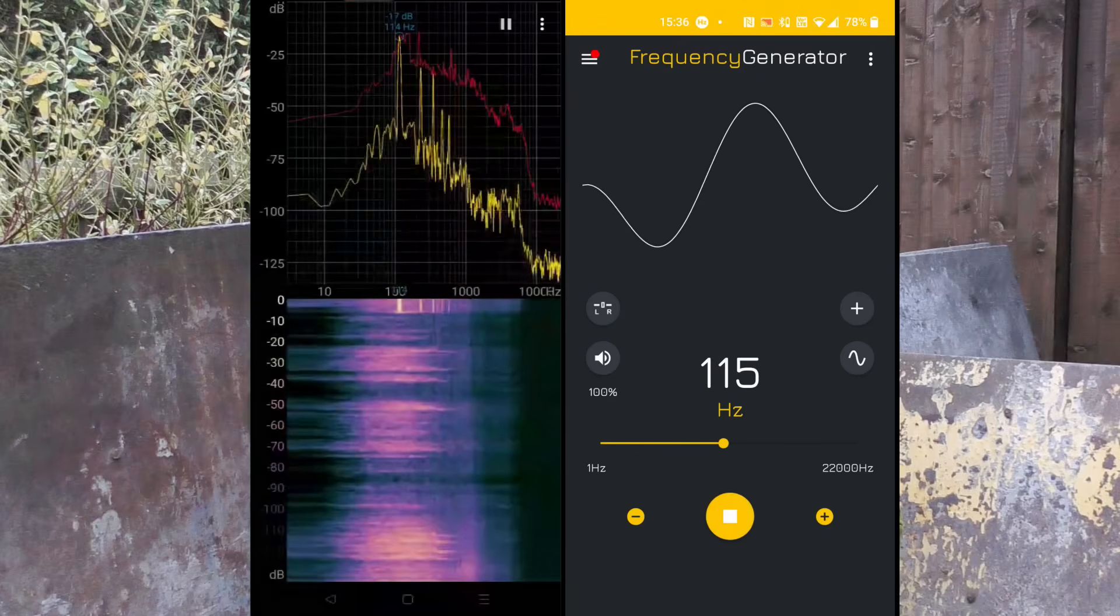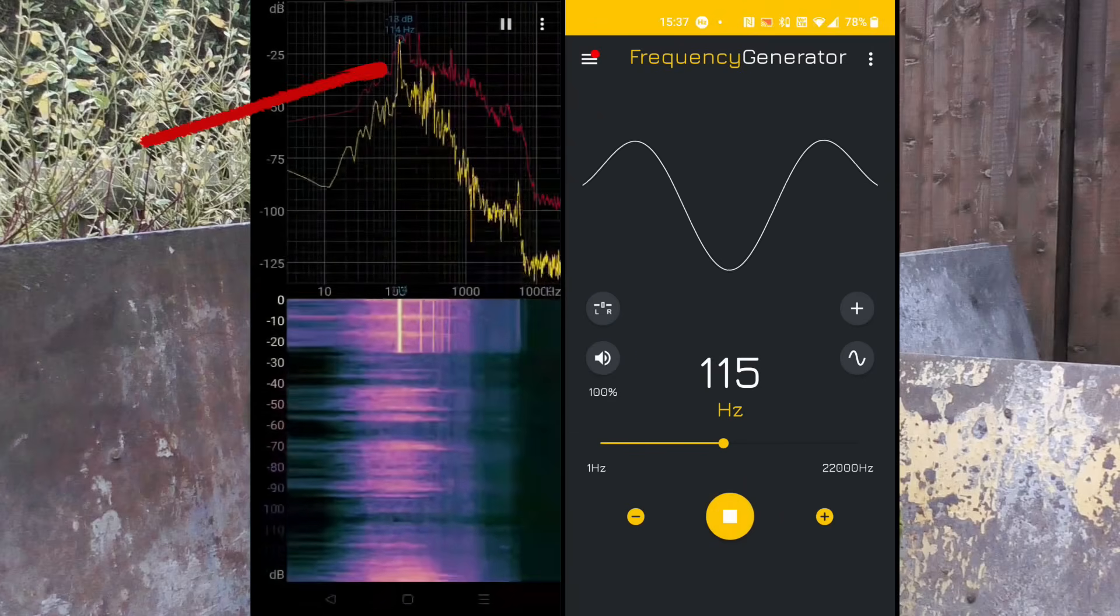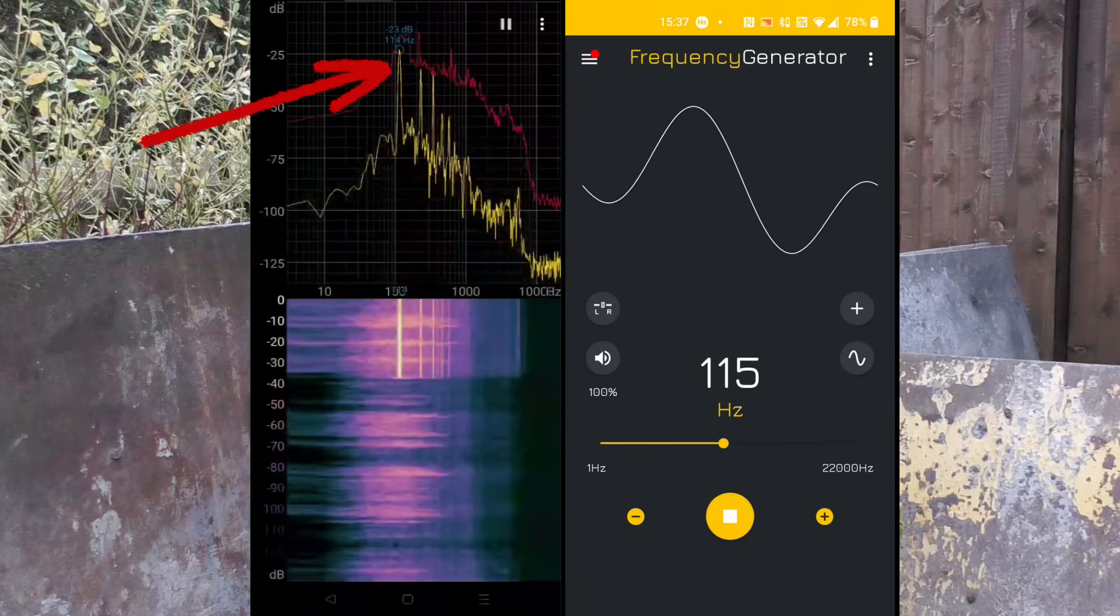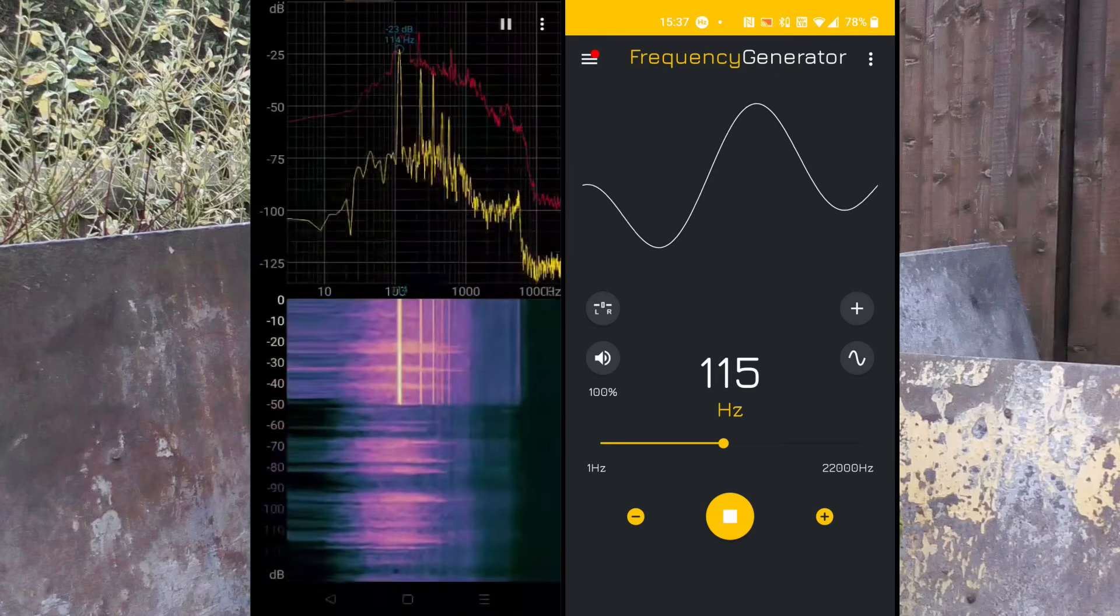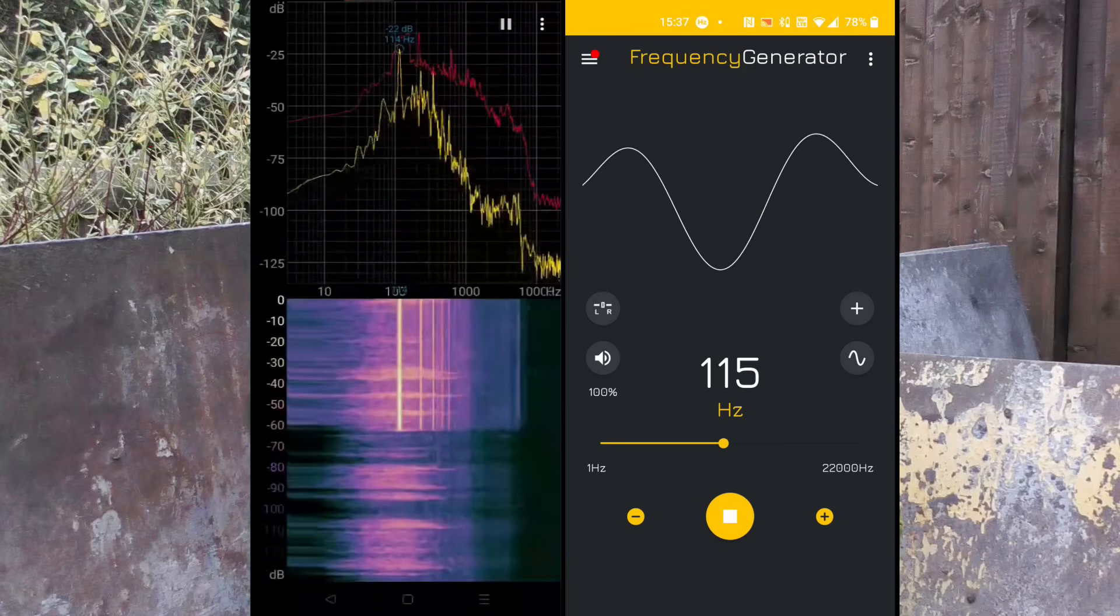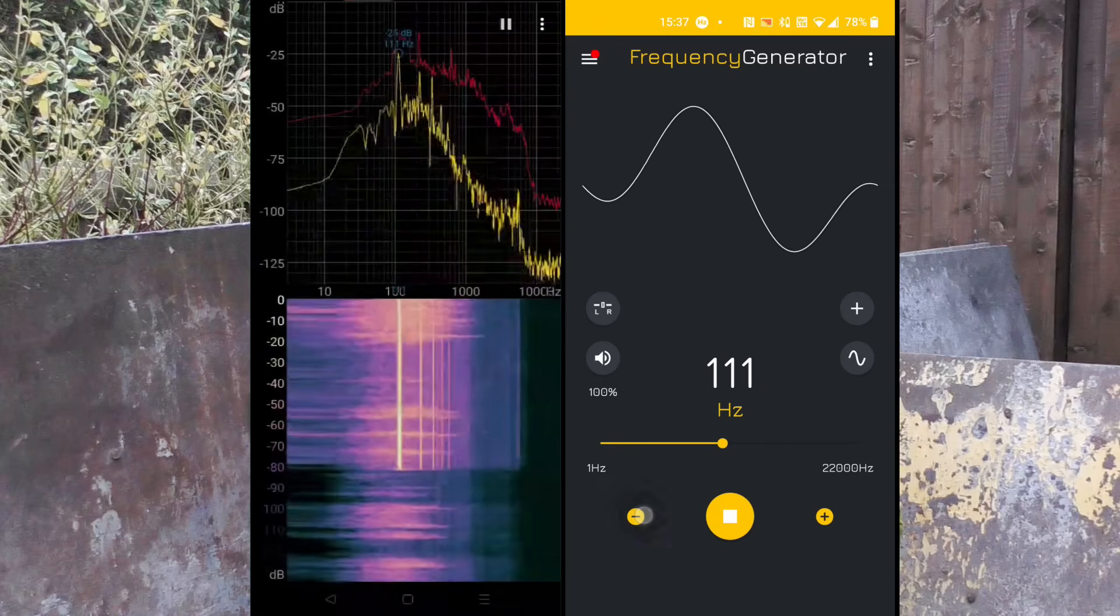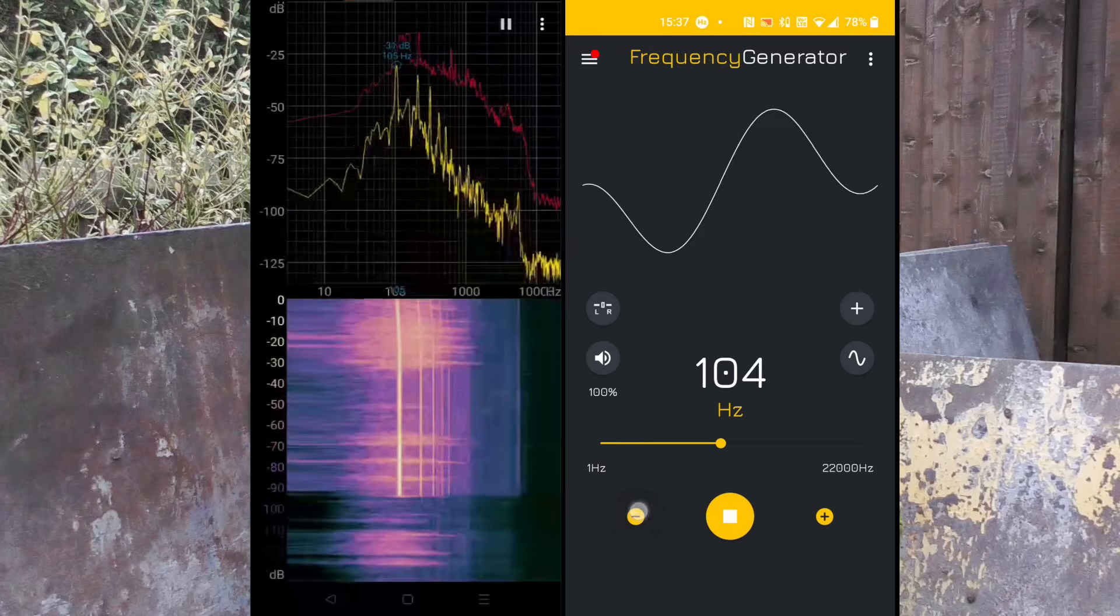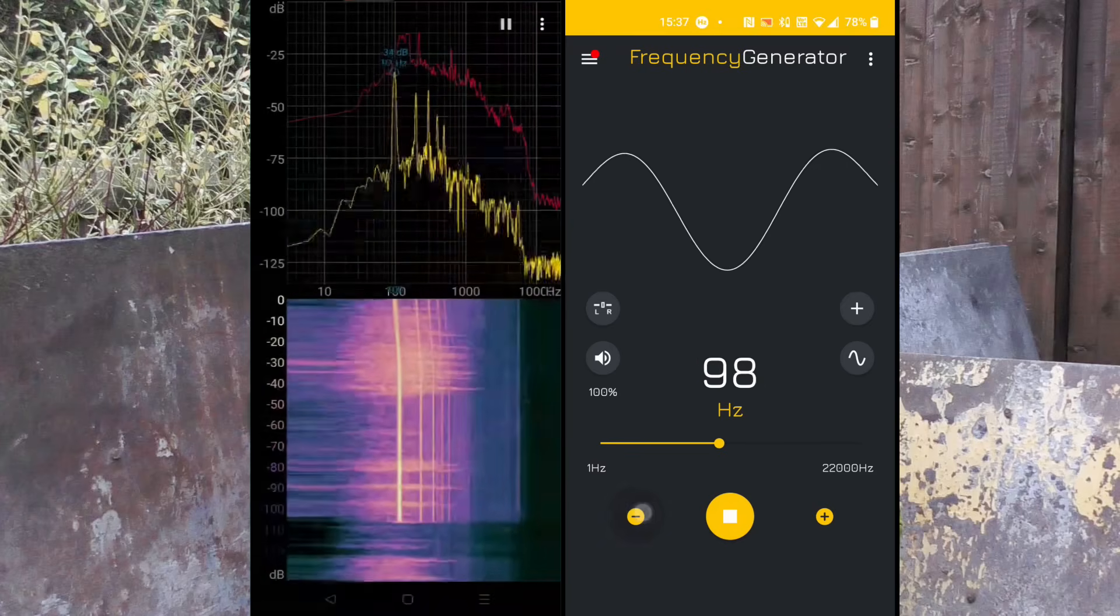On the left, we have a spectrum analyzer showing an amplitude peak at the generated frequency, and the lower graph is a time series showing the spectral intensity over time. So as we lower the frequency generated, you can see that upper amplitude peak getting less.